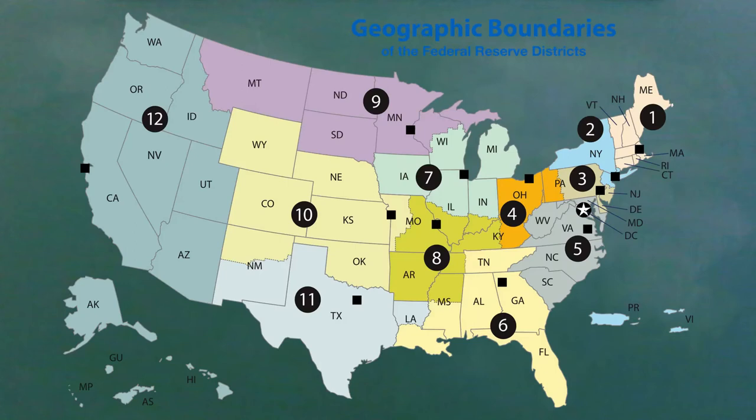The Fed also has 12 regional reserve banks in major cities around the country. They are composed of all the banks which are members of the Fed, which is about 38% of the banks in the country.